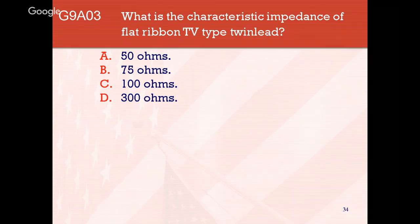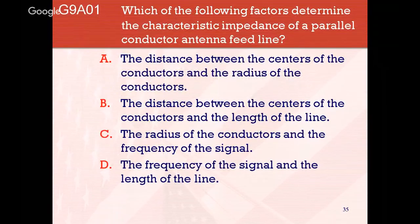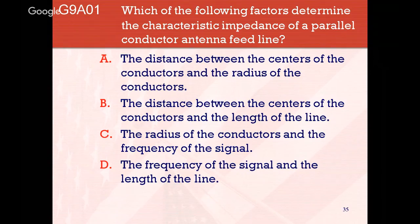The characteristic impedance of flat ribbon TV-type twin lead is 300 ohms. The factors that determine the characteristic impedance of a parallel conductor antenna feed line are predominantly the distance between the centers of the conductors and the radius of the conductors — this applies to ladder line and other open twin-lead type feed lines.